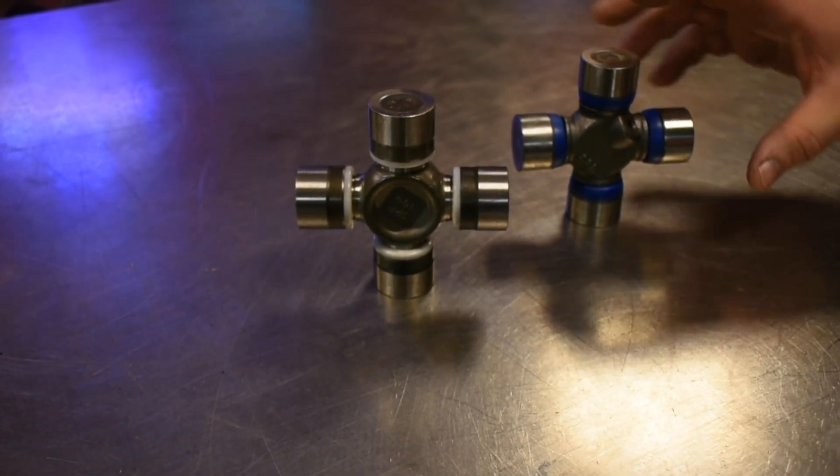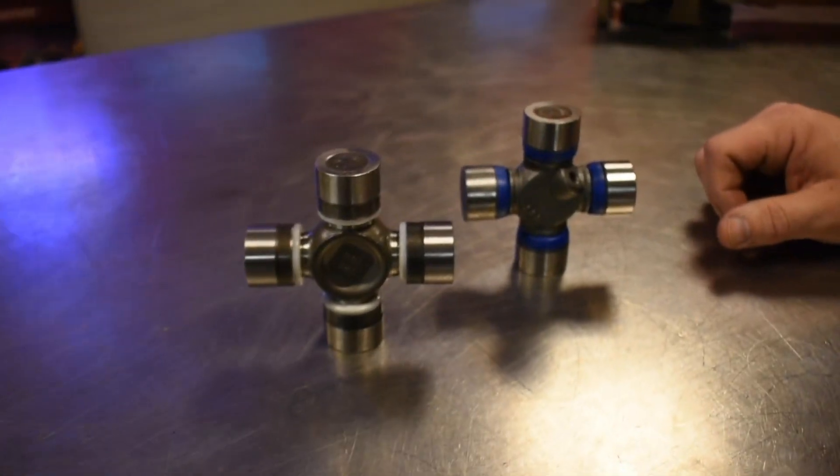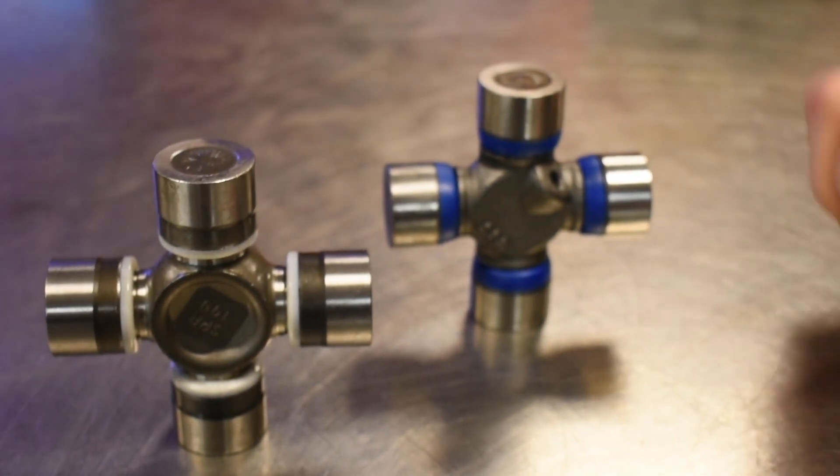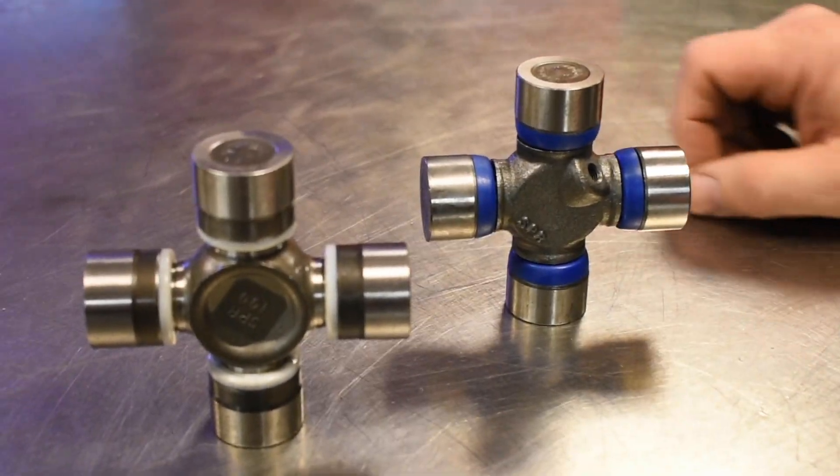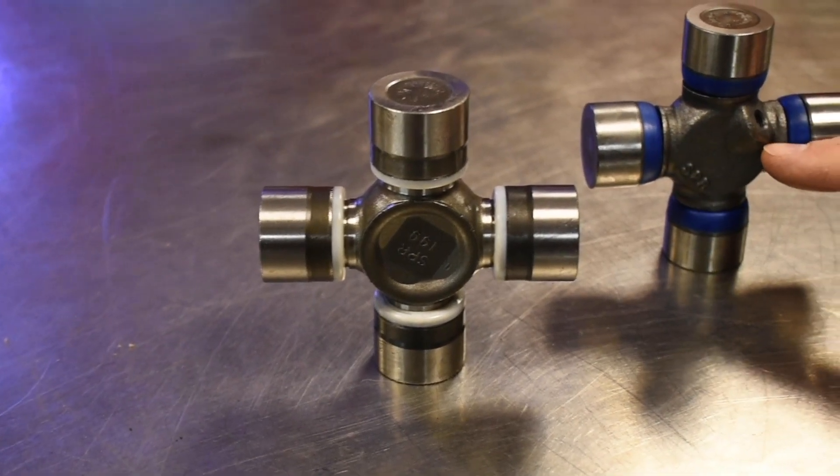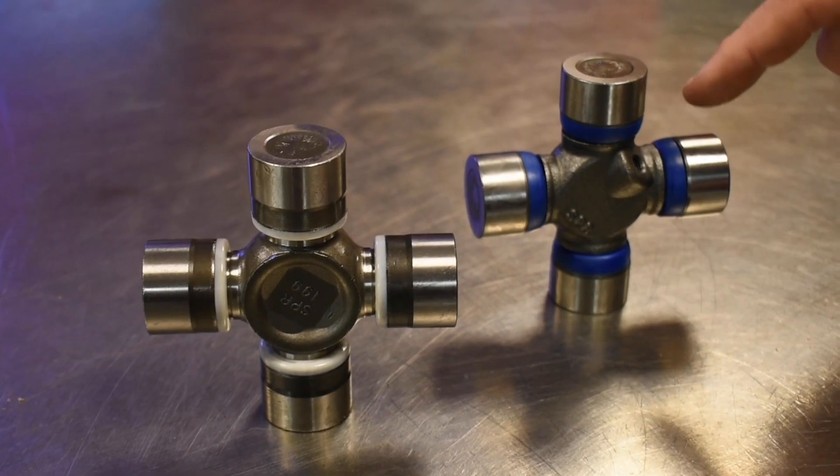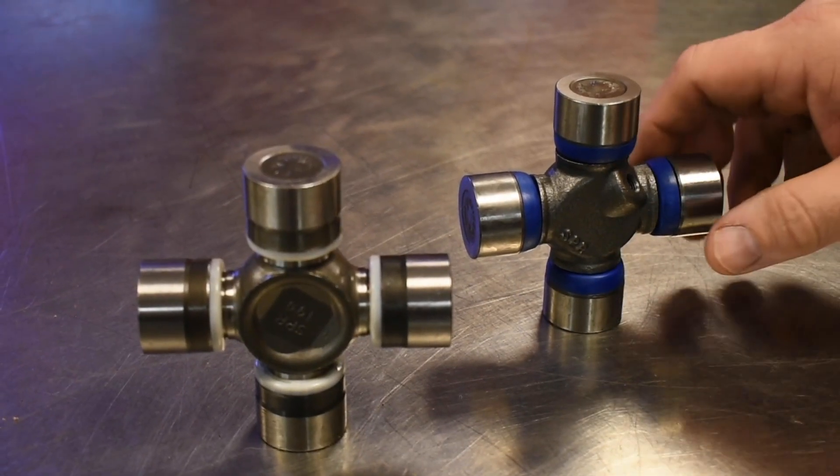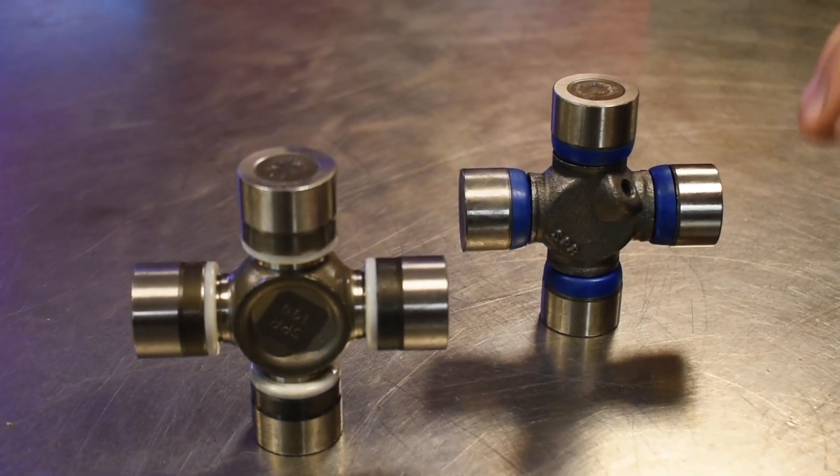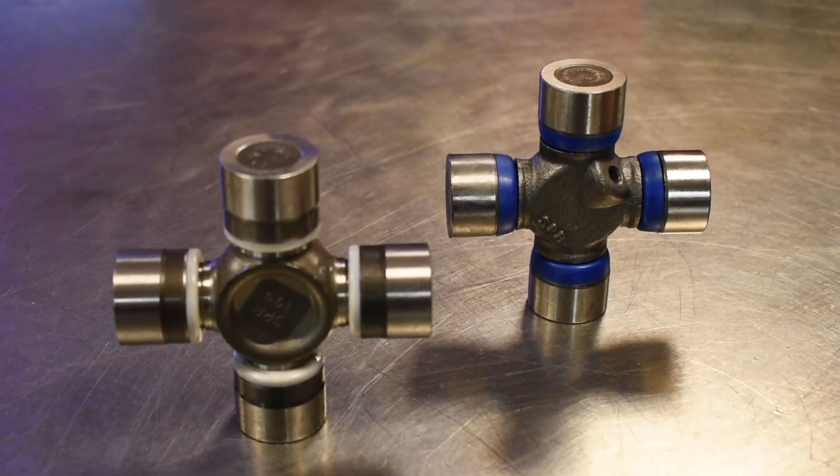The first problem with a greasable u-joint is it's not as strong as a sealed u-joint and the reason why is because this cross, this trunnion, is drilled through all the way from end to end plus at a 45 degree angle here. So that substantially weakens the universal joint.